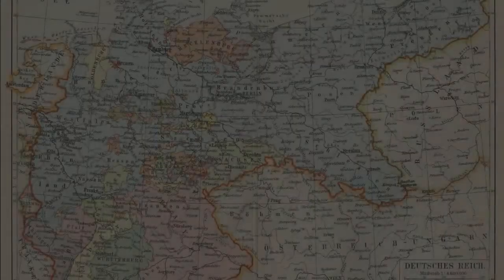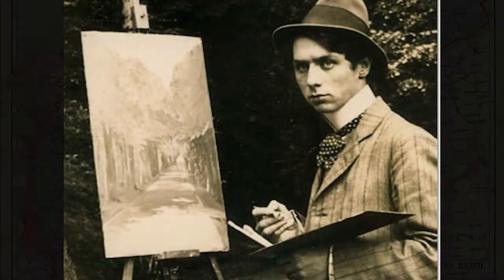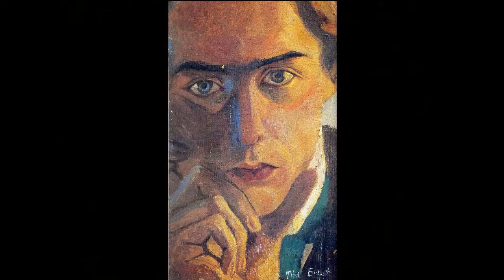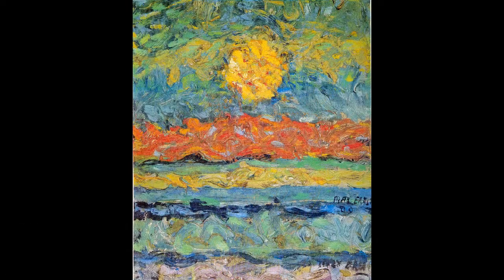Max Ernst was born in Germany in 1891. He began to paint at home under the direction of his strict father, who was an amateur artist. Ernst never had any formal art training until 1909, where he went to college to mainly study philosophy, but also some art as well. He left his studies shortly after, in the same year, and began painting full-time.